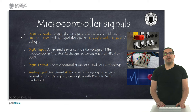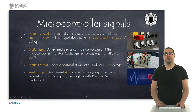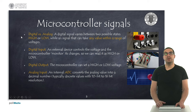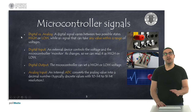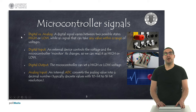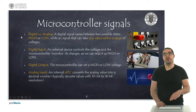In microcontrollers, there are different types of signals. We distinguish between digital and analog. A digital signal varies between high and low states, so it only has two different types of states, while an analog signal varies within a specific range, so it has multiple values.